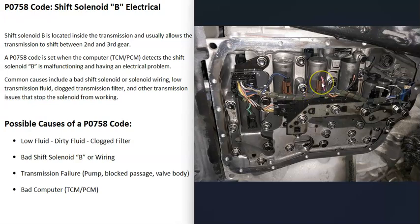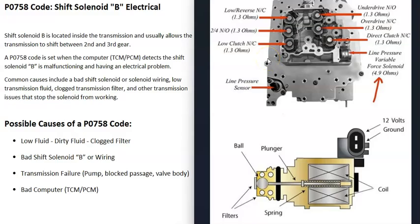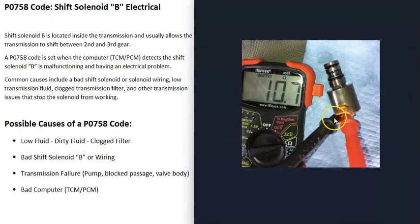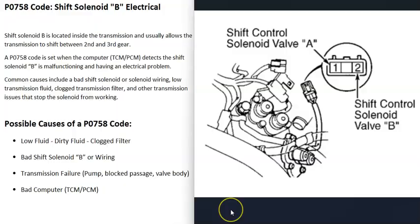Once you locate shift solenoid B, there are a few ways to troubleshoot it. You can check to be sure you're getting the correct voltages, and you can also use a multimeter to test the shift solenoid B. The basics of testing it: look up what the rated ohms are supposed to be for that specific solenoid, since there can be differences. Set your multimeter to ohms and check the reading. If it falls outside the rated range, you know it's bad and needs to be replaced. You can also test the electrical side to verify correct voltage is reaching the solenoid.